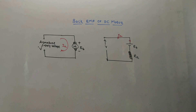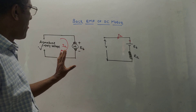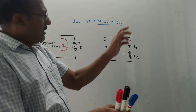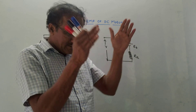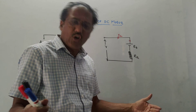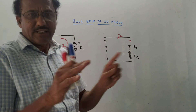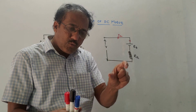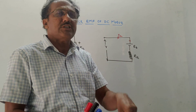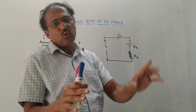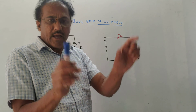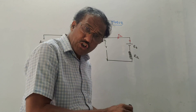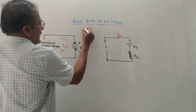The next important part is the back EMF of DC motor. The electric supply is given to the brushes and commutators, and the rotation of coil takes place in between the permanent magnet — north pole and south pole. According to Faraday's law, due to this rotation in the magnetic field, an EMF is induced. According to Lenz's law, this induced EMF provides opposition to the cause which induces it — that is, opposition to the supply voltage V. This is known as back EMF, denoted by EB.